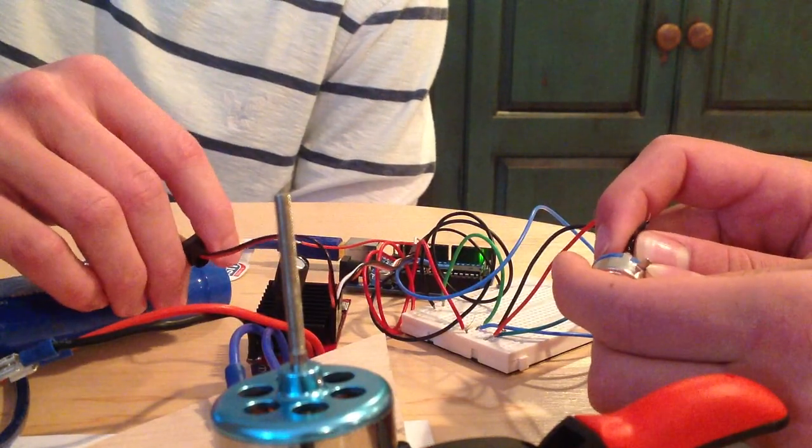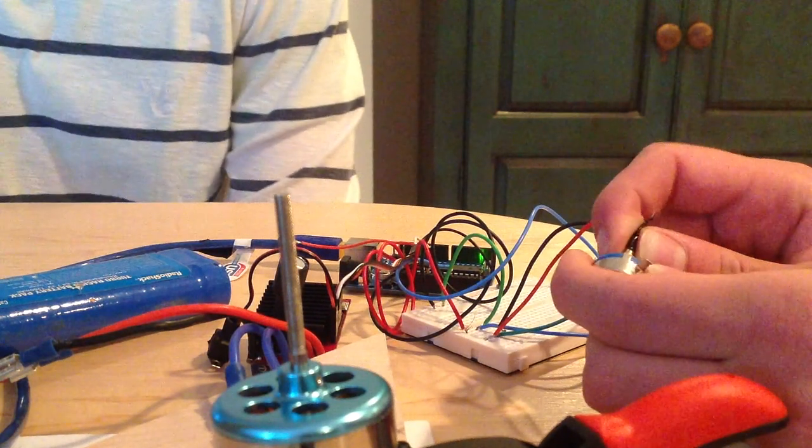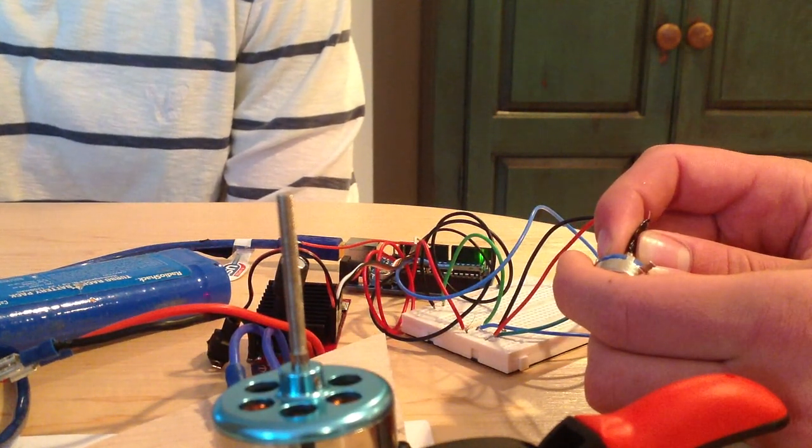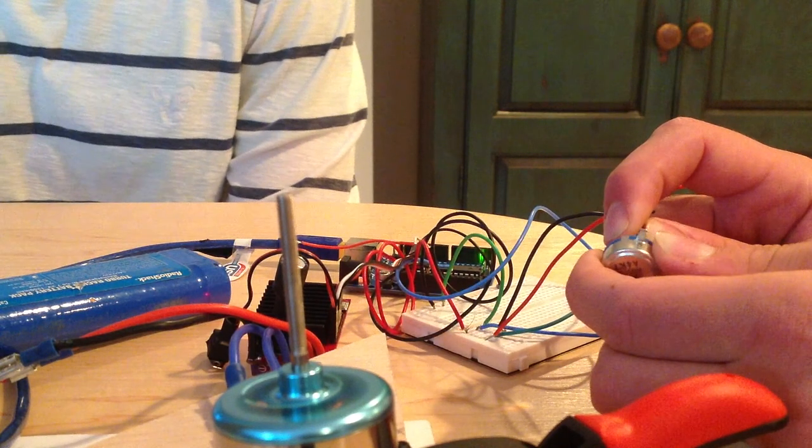So this is a quick example of it working. We turn it on. We need to find the center first. And then from here, we have it set to go forward and reverse.